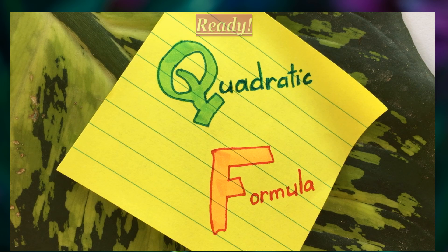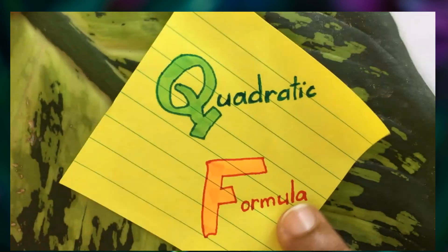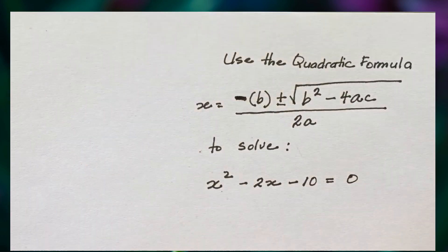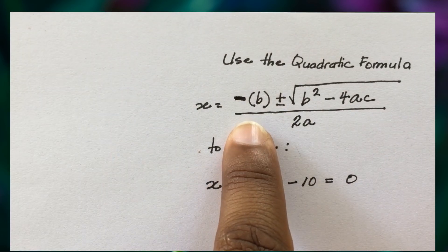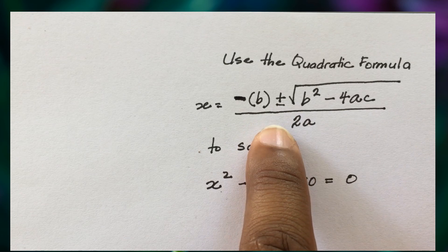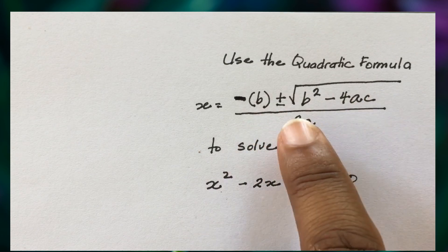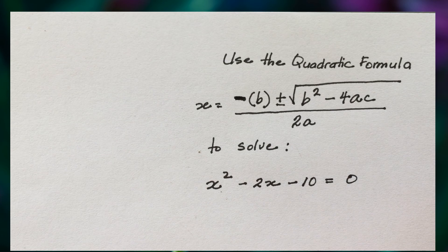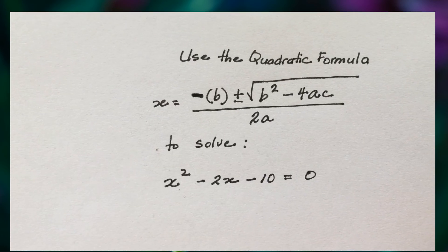We're going to look at how to use the quadratic formula to solve quadratic equations. This is what the formula looks like — negative b, plus or minus the square root — it's a little long. What we're going to do is identify the a, b, and c values and substitute them into the formula. Ready to try that? Let's go.